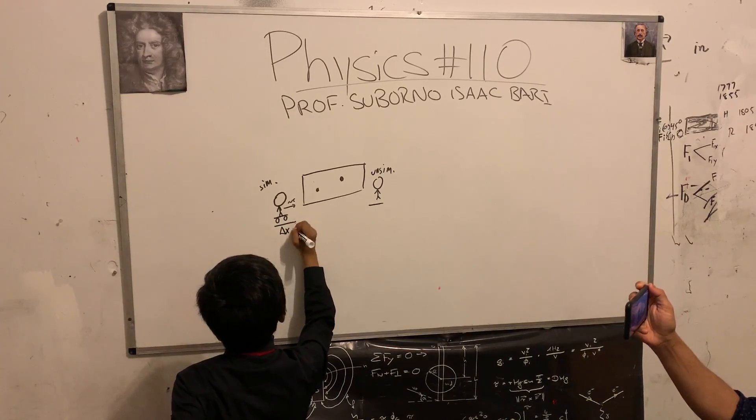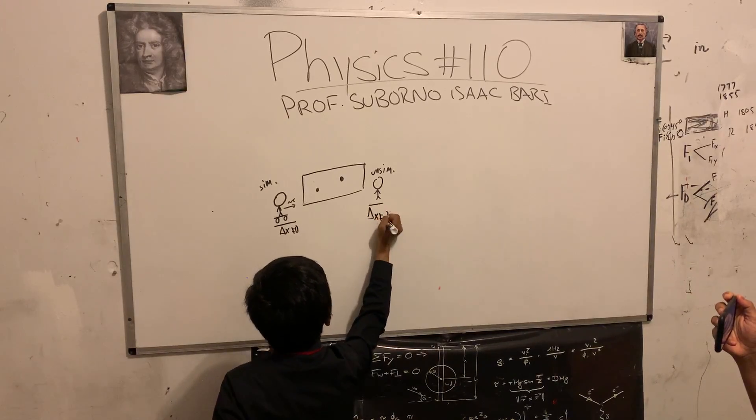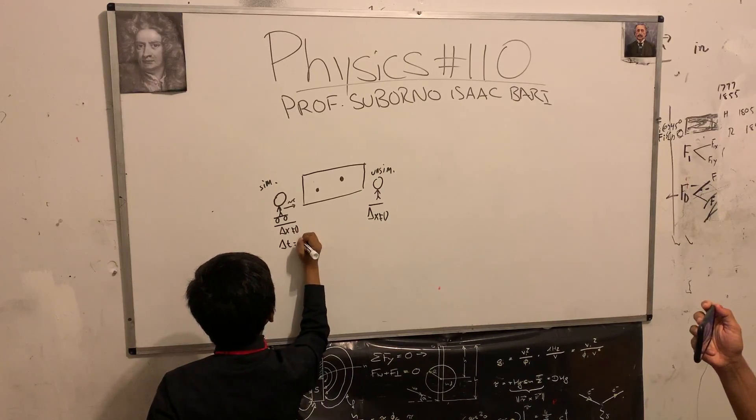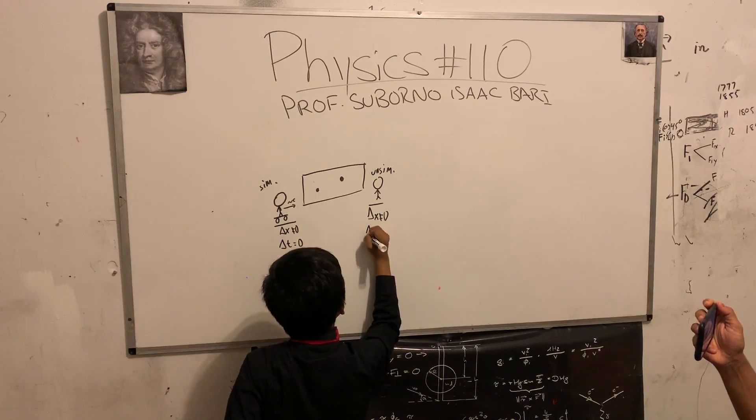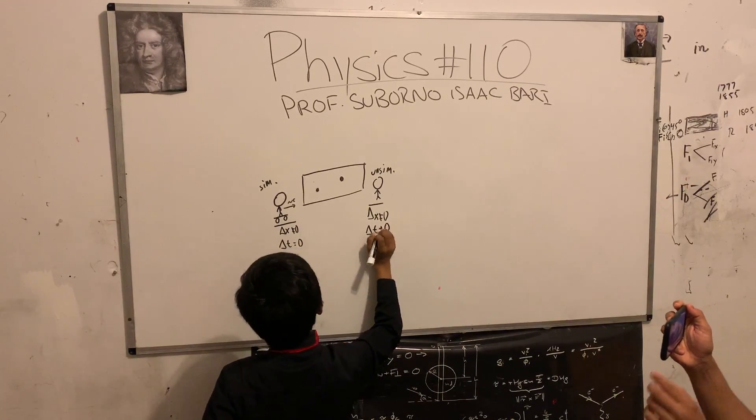So now this means that for both of them delta x is definitely not going to be equal to zero. However, delta t is going to be equal to zero for one, but delta t is not going to be equal to zero for the other.